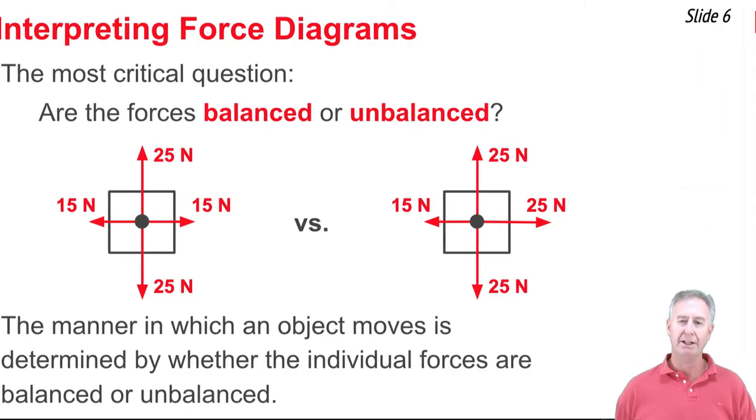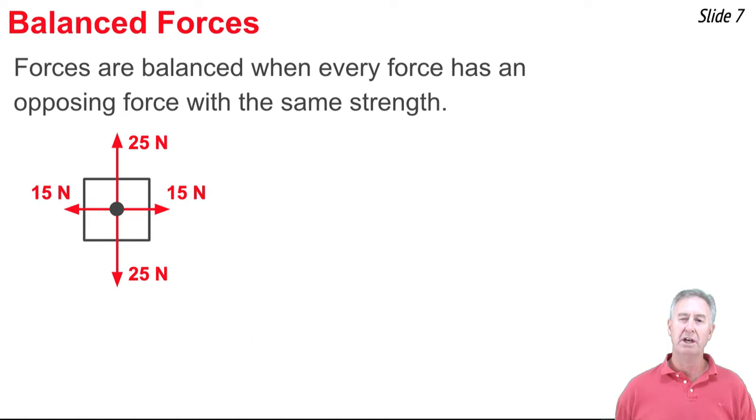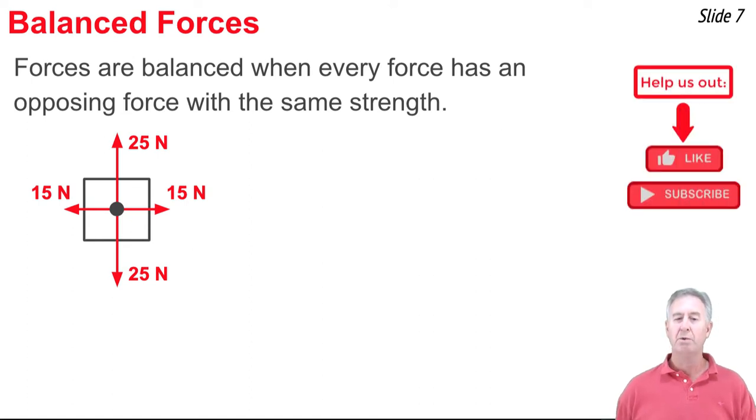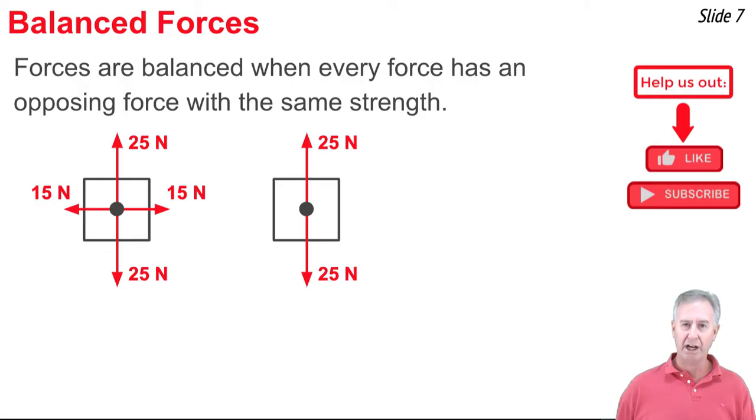So let's begin with balanced forces. What do we mean when we say the forces are balanced? Well, what we mean is that every force on the diagram has an opposing force that is of the same strength. So if you look here, you see the 25 newtons up has an opposite or opposing force of 25 newtons down, and the 15 newtons to the right is opposed by a leftward force of 15 newtons. So opposing forces balance each other out.